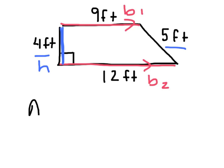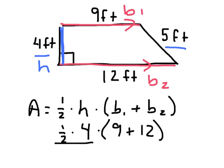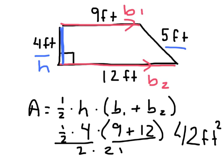The area of a trapezoid equals one-half times the height times the sum of the bases. So it's one-half times our height of four, times the sum of nine plus twelve. Half of four is two, times what's in the parentheses — that's twenty-one. Two times twenty-one is forty-two feet squared.